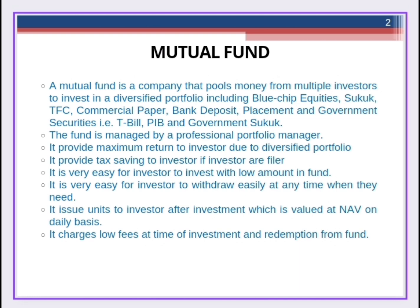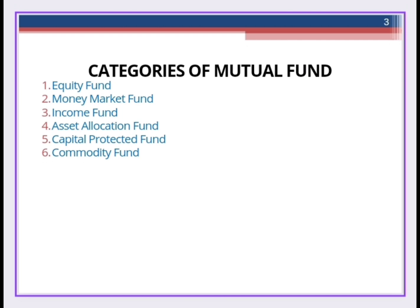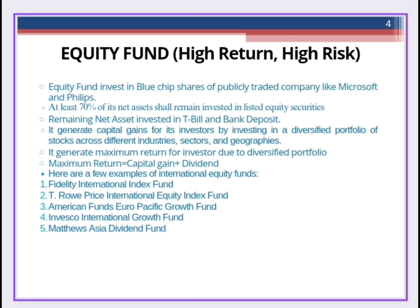Units are valued at NAV on a daily basis, and there are low transaction costs — meaning at the time of investment and redemption, you pay low fees to the mutual fund. The following categories of mutual fund operate in the international market: number one, equity fund; number two, money market fund; number three, income fund; number four, asset allocation fund; number five, capital protected fund; and number six, commodity fund.